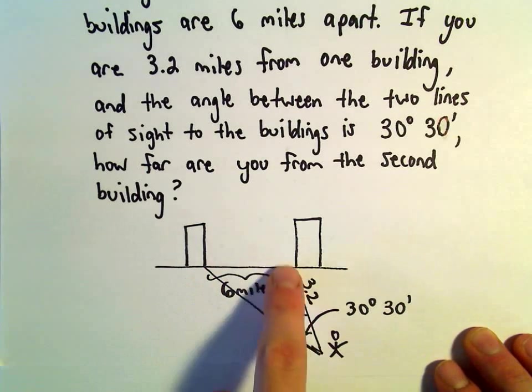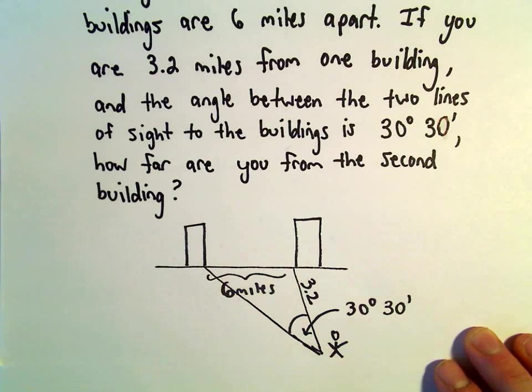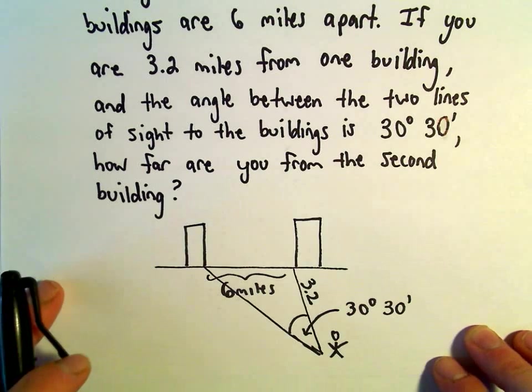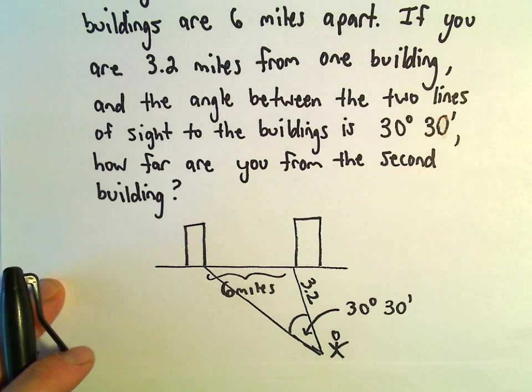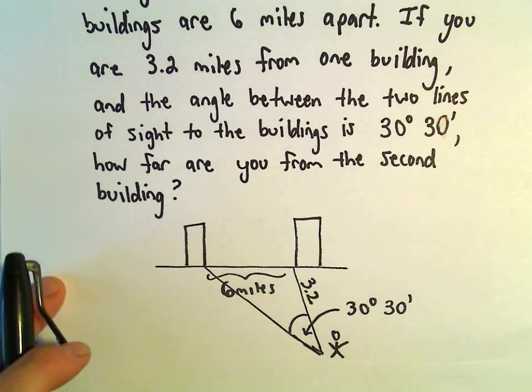And we know that the angle between the two lines of sight is 30 degrees 30 minutes. So again, we just want to find the distance to the second building.